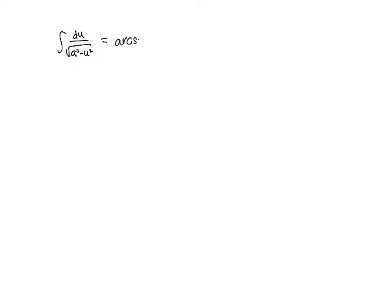The question was asked why those integration formulas gave us the functions arc sine or arc tangent. So let me do the proof of the first one. To prove that these are actually equal, let's start. We had du over the square root of a squared minus u squared equals arc sine of u over a plus C. So let's say our function is y equals the arc sine of u over a.